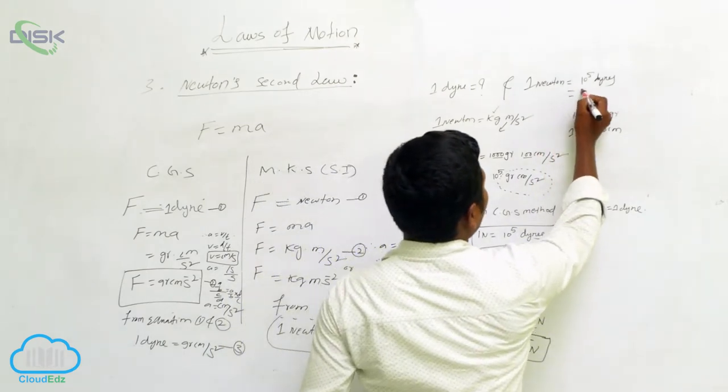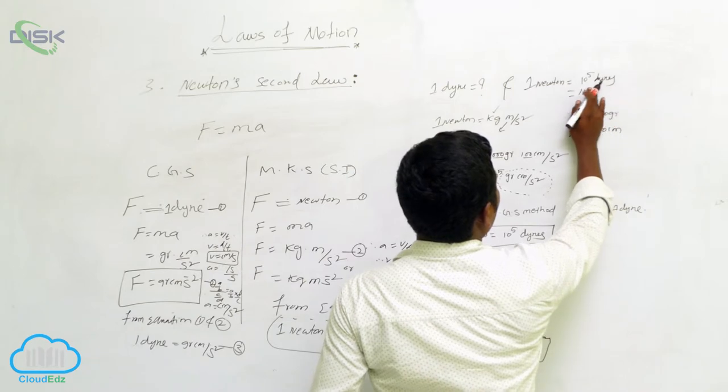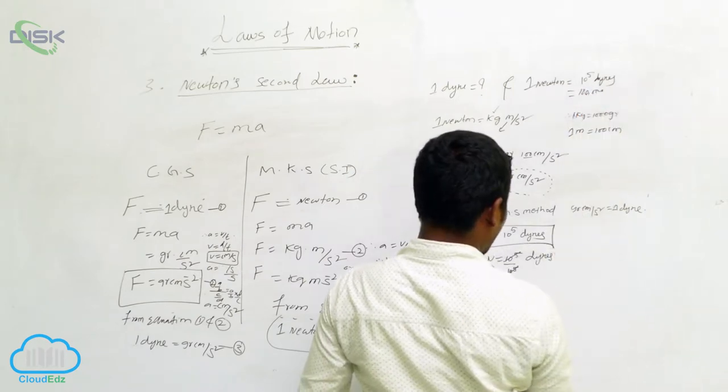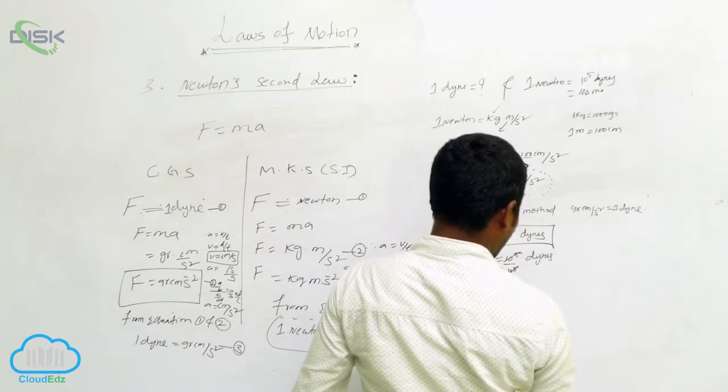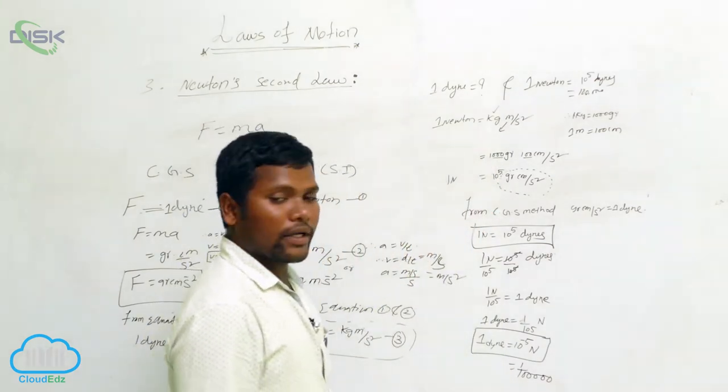What we can say: simply 10 to the power of 5 dynes means we can write 1 with five zeros, 100,000. Here, 1 by 10 to the power of 5, we keep how many zeros? 5 zeros. Means we write 0.00001.